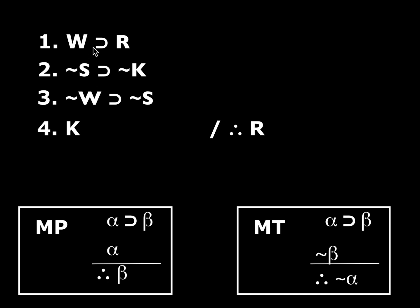There are three conditionals. Both MP and MT require conditionals, but the other requirement differs: for MP I need a conditional and the antecedent; for MT I need a conditional and the negation of the consequent. Here's a conditional on line one — do I have W? Nope. Do I have not-R anywhere? Nope. So I can't use MP or MT on line one. What about line two? It's a conditional — do I have not-S? Nope. Do I have the negation of the consequent? The consequent is not-K, so its negation would be K. Yeah, right there. So I can do modus tollens on lines two and four, giving me the negation of the antecedent — that would be S.